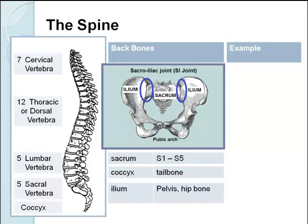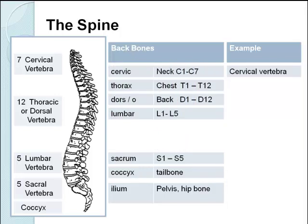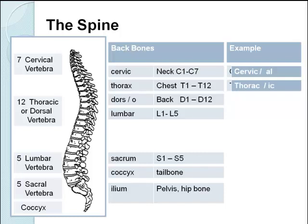Let's have a look at some examples. Cervical vertebrae — cervical relating to the neck. Thoracic vertebrae — thoracic relating to the thorax, relating to the chest. Dorsal vertebrae — these are the back vertebrae; dorsal breaks down to relating to the back.